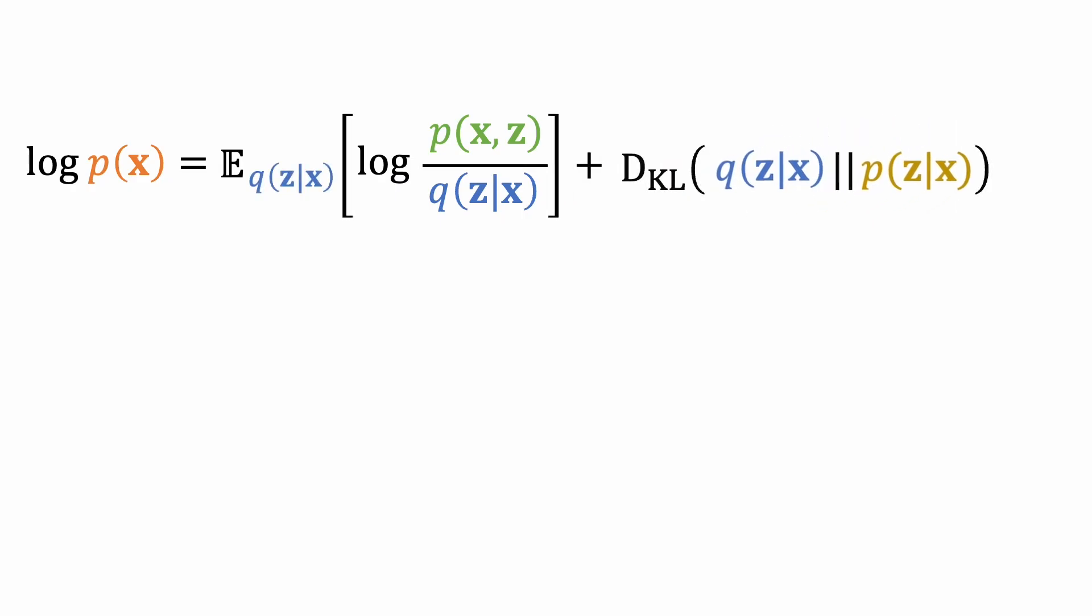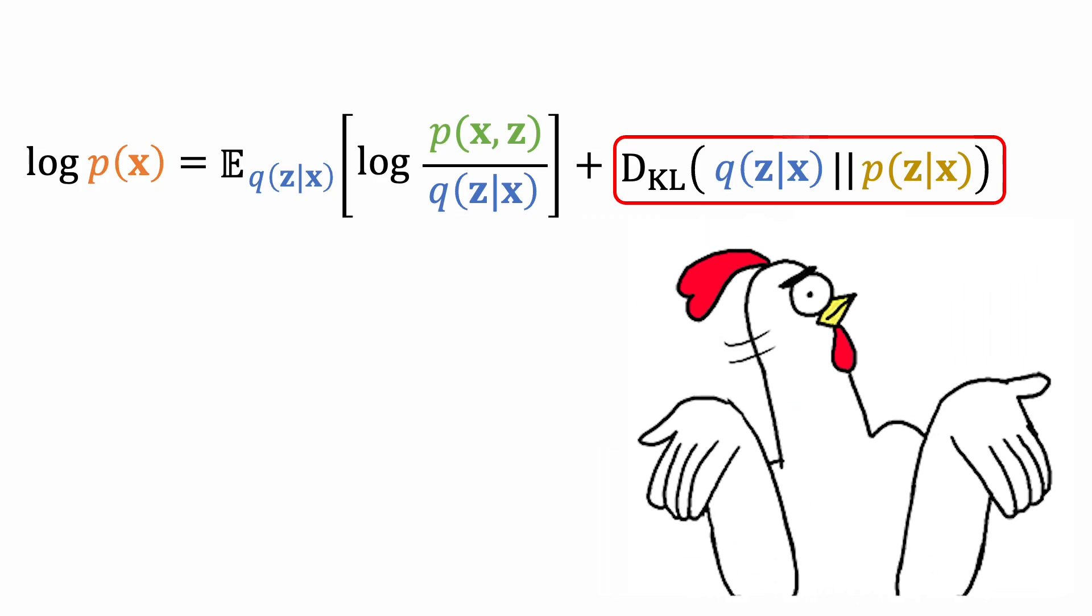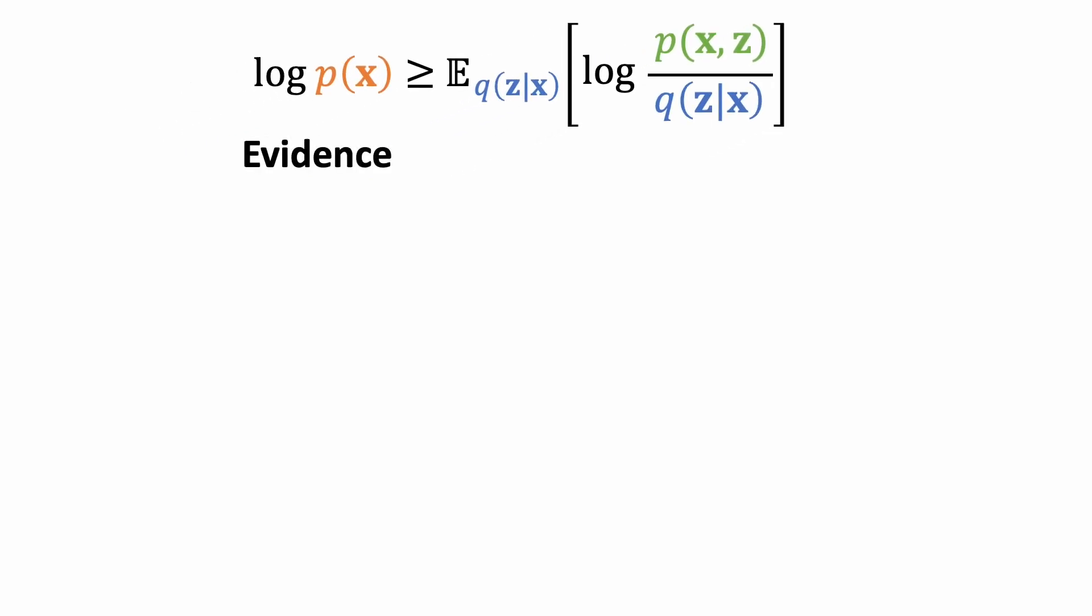We now recognize the second term is a KL divergence between our encoder q and the ground truth encoder p. We don't know this value because we don't have access to the ground truth encoder p, but we do know the KL divergence is non-negative. This means that the first term is the lower bound of the log-likelihood value. Since the log-likelihood measures the statistical evidence for our model, this term is known as evidence lower bound, or ELBO.